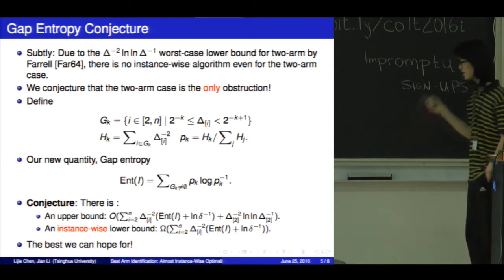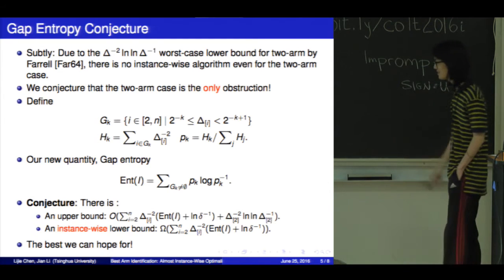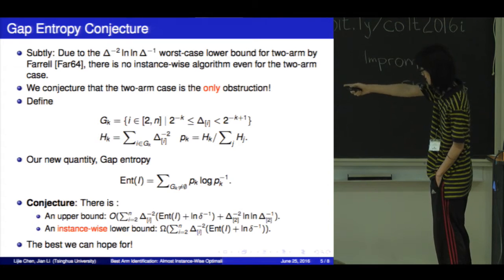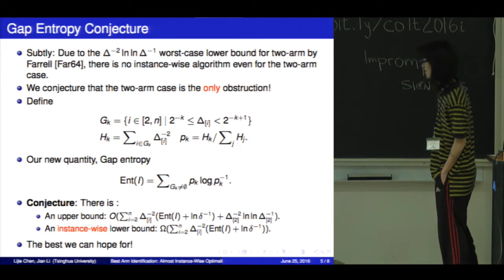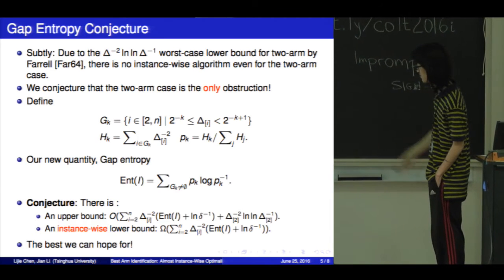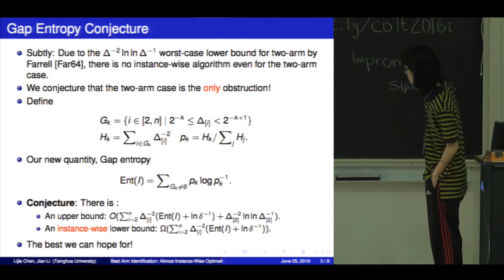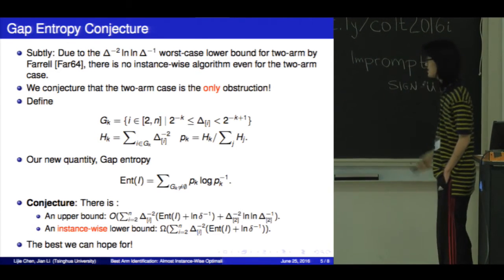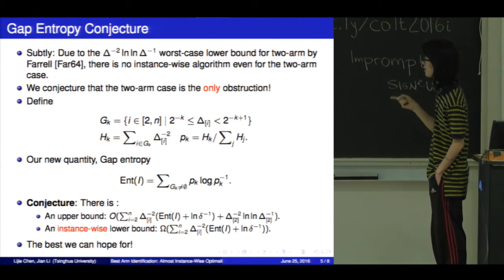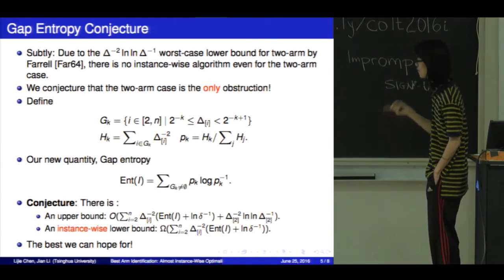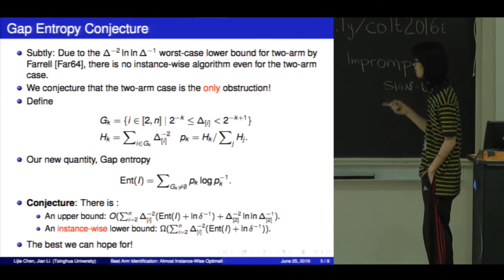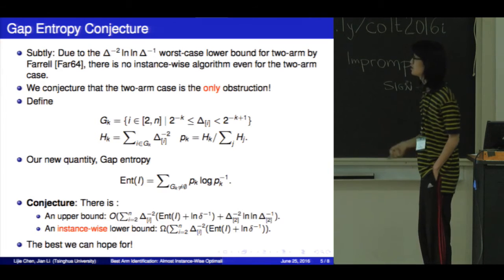Then we have two conjectures. The first one is that there is an upper bound of this complexity. The second one is that there is an instance-wise lower bound of this complexity. So we think that modulo the lower bound for the two-arm case, there will be an optimal algorithm. This is the best we can hope for, due to the worst-case lower bound for the two-arm case.